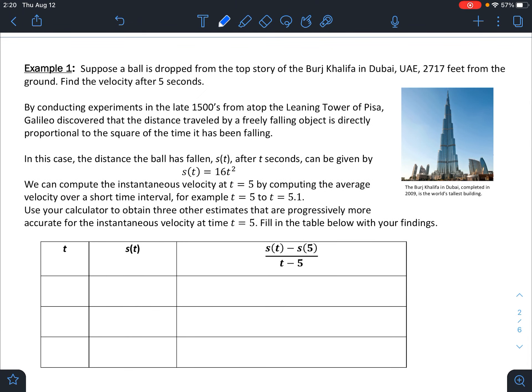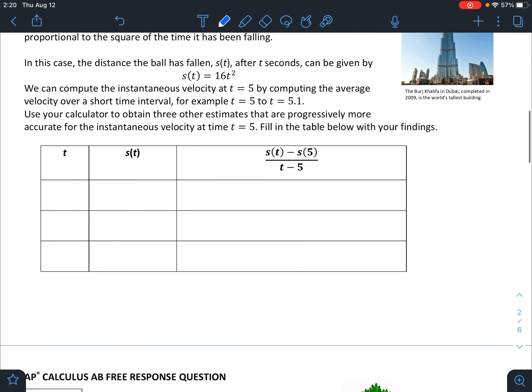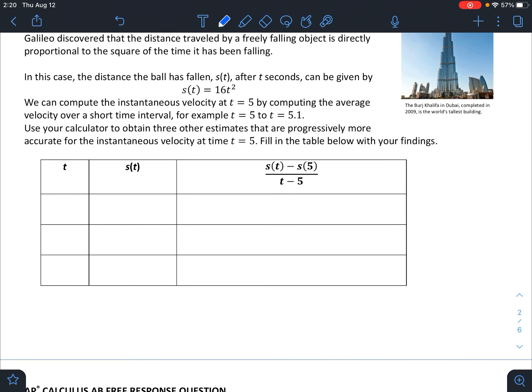So here's our first example. Suppose a ball is dropped from the top story of the Burj Khalifa in Dubai, 2,717 feet from the ground. Find the velocity after 5 seconds. So this is a calculus problem. We can't do this yet, but we can estimate it by using non-calculus methods. Galileo discovered that the distance traveled by a freely falling object is directly proportional to the square of the time it has been falling.